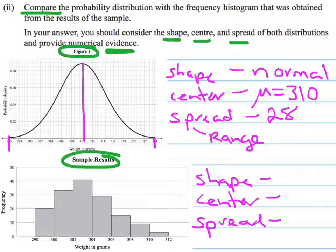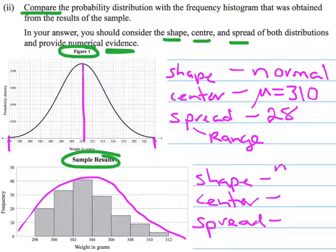Okay, then look at our sample distribution. And that, now if I was to draw the shape over the top of that, doesn't look as symmetric as I would like it to. I would say that that is going to be slightly skewed to the right. So I'm going to say right skew.